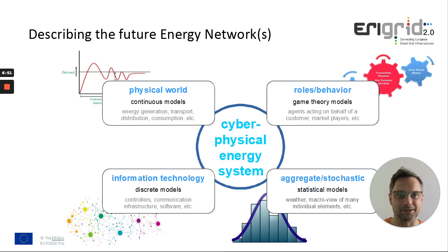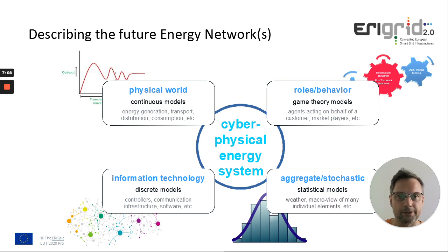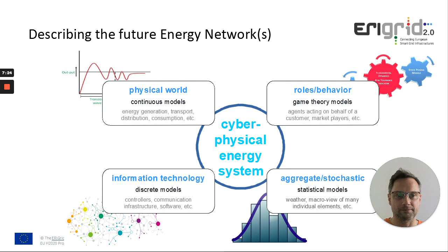The right side also has new mechanisms that are part of this future power system. The upper right corner is everything that has behavior and roles — that's people, but also software agents that act on somebody's behalf. You can use game theory if there are only a few players, or multi-agent systems if you have many of them. Again, this doesn't fit to the other two worlds. The lower right corner is stochastic and statistical processes — such as the weather or other phenomena you're not able to model from first principles. So with these four sub-problems, you already have four different worlds that you have to combine somehow. This is not easy.